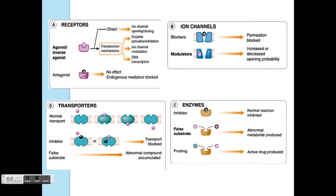Just a brief overview — this is RICE. Transporters basically act like a person who passes on a parcel: they get it from one side and bring it to the other side. Again, there can be inhibitors, false substrates, and also enzymes which react in the same way.